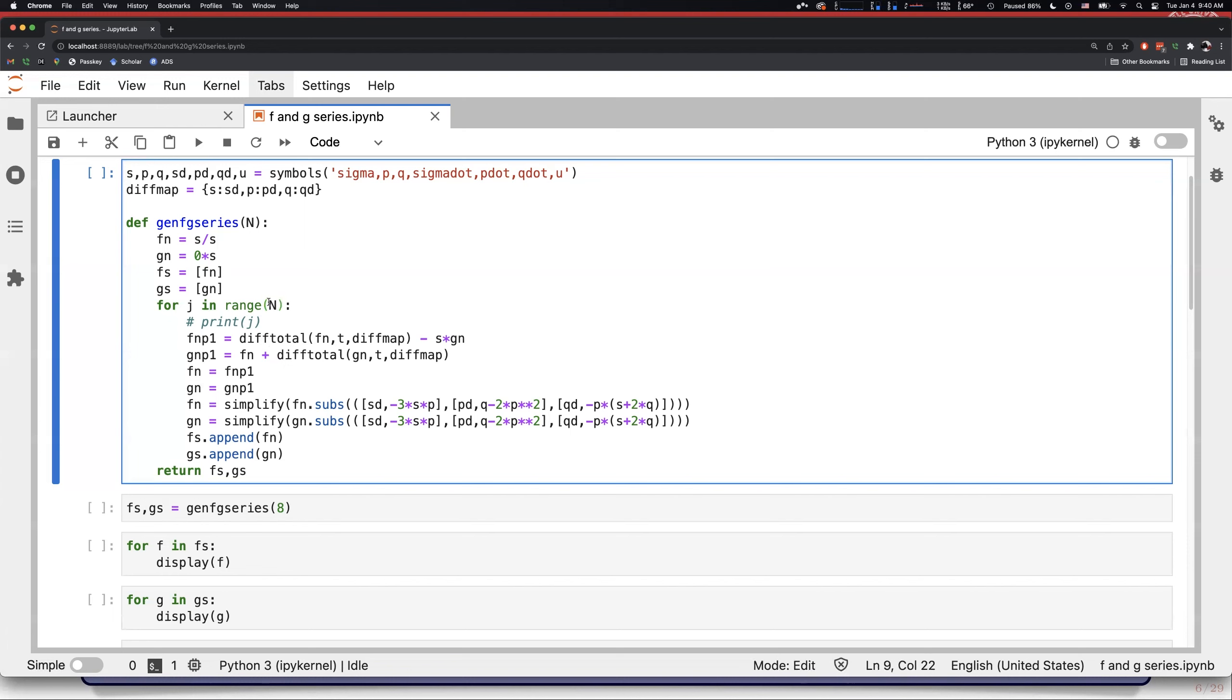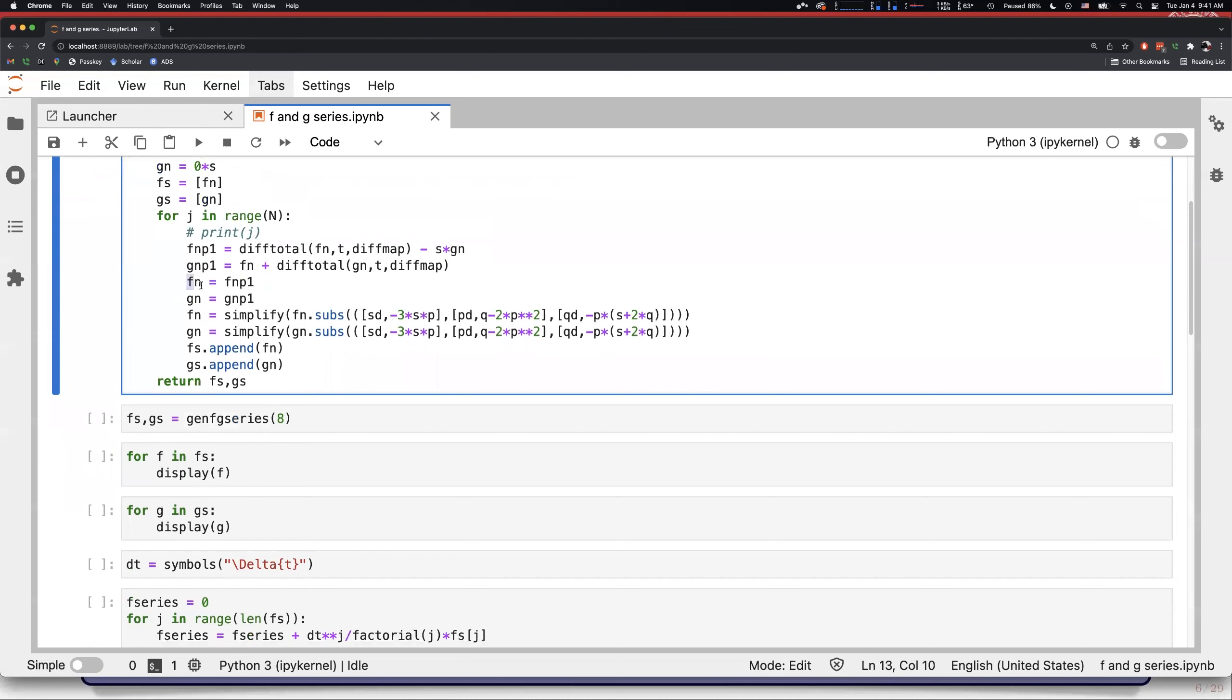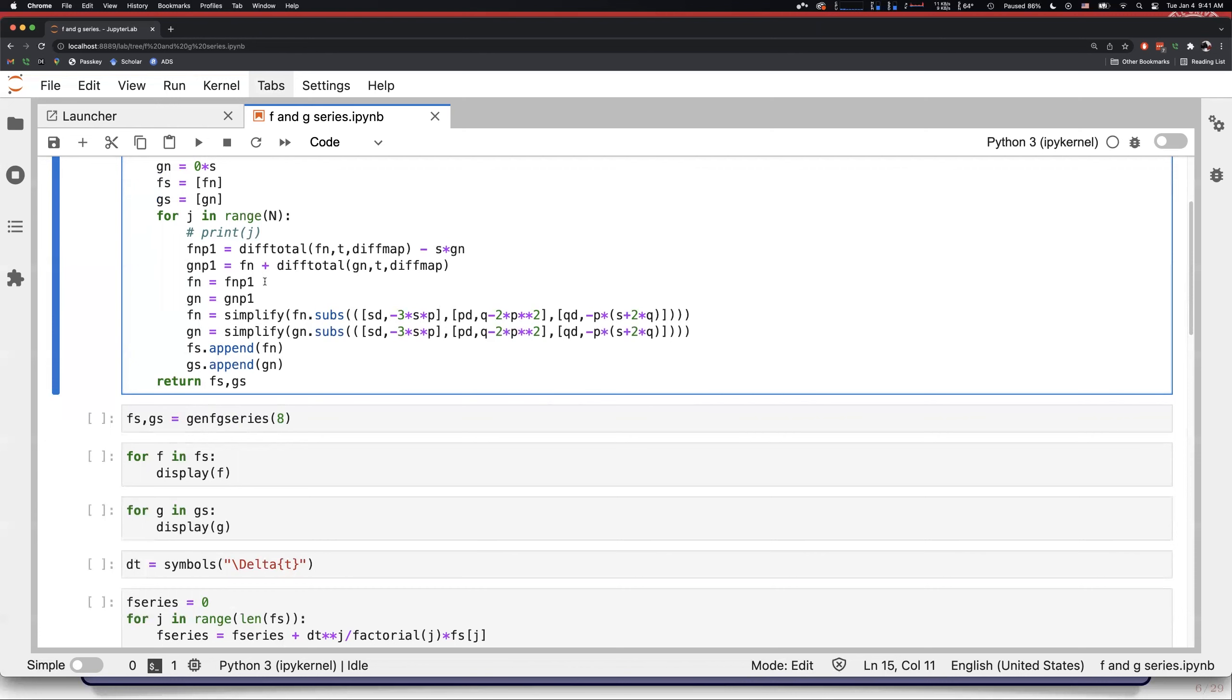And so, we're going to iterate up through capital N, and for each iteration, we're going to differentiate f sub n with respect to time and subtract s times g sub n, as here is representing sigma, like so. And then we're going to calculate g sub n plus 1 as f sub n plus the total derivative of g sub n with respect to time. So, we are then going to set our current iterants to the plus 1. We are going to simplify them, substituting the various relationships between sigma dot and p dot and q dot that we previously derived. And then we're going to add our new iterants to the list, and we're going to continue.